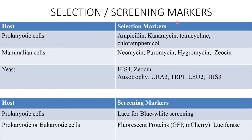For selection and screening markers: if the host is prokaryotic, selection markers include ampicillin, kanamycin, tetracycline, or chloramphenicol. For mammalian cells, neomycin or hygromycin are used. For yeast cells, zeocin or auxotrophic markers are used — such as URA3 (uracil), TRP1 (tryptophan), LEU2 (leucine), or HIS3 (histidine).